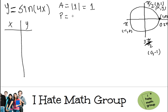Now, the period, remember, is 2π divided by the number that is multiplying the x. In this case, this is 4. So 2π over 4 is the same as π/2.